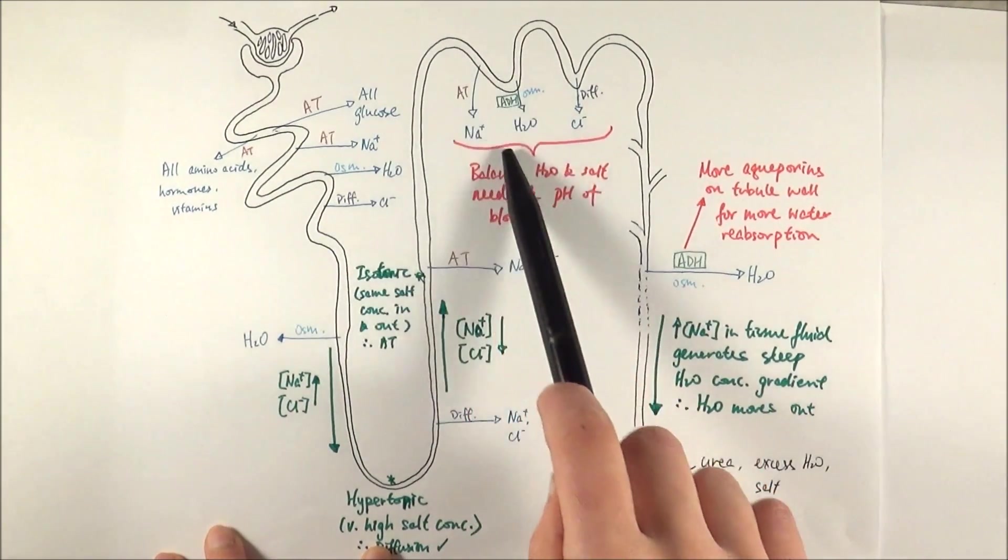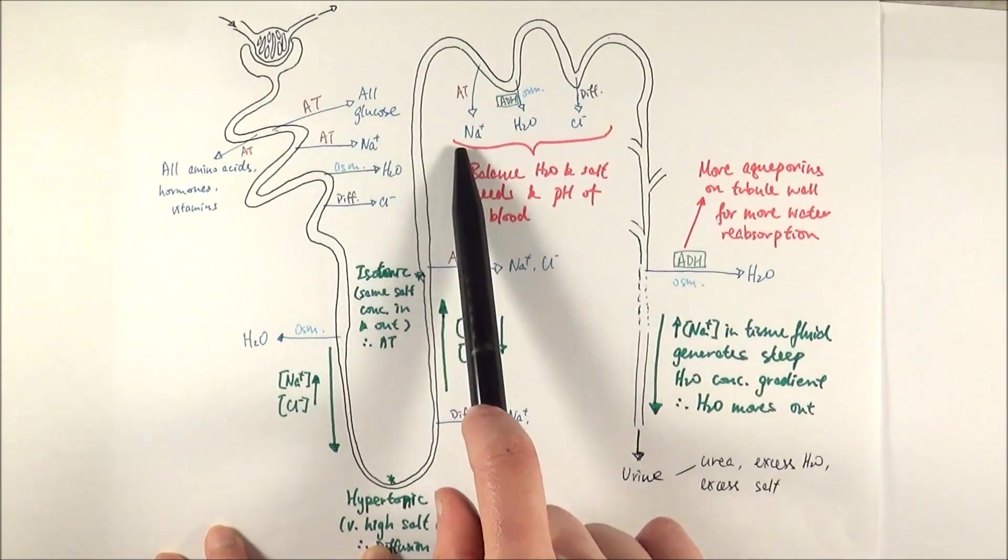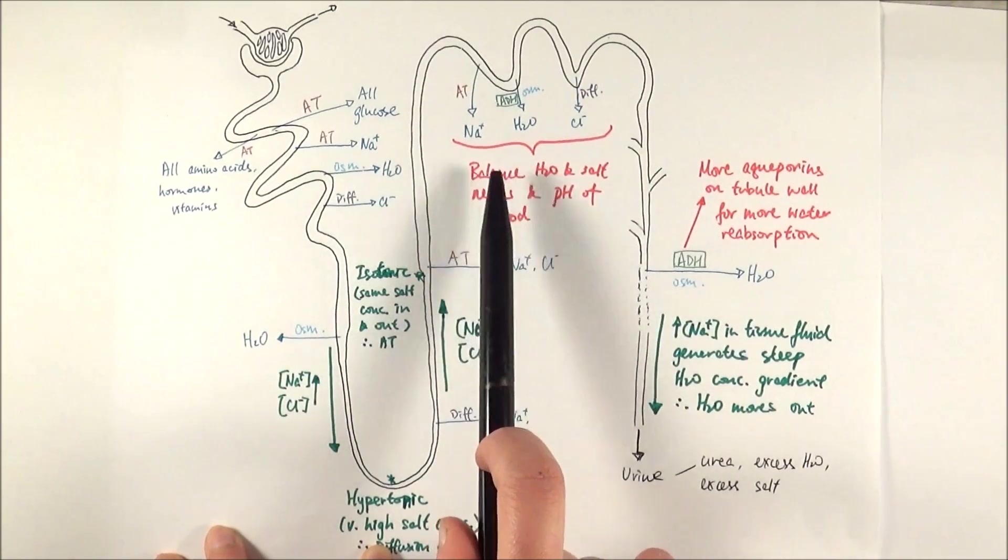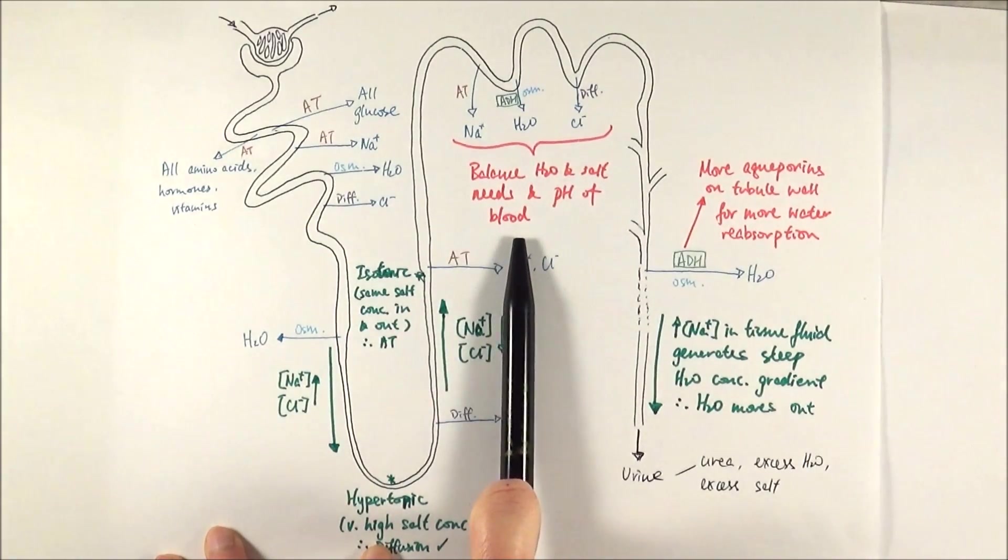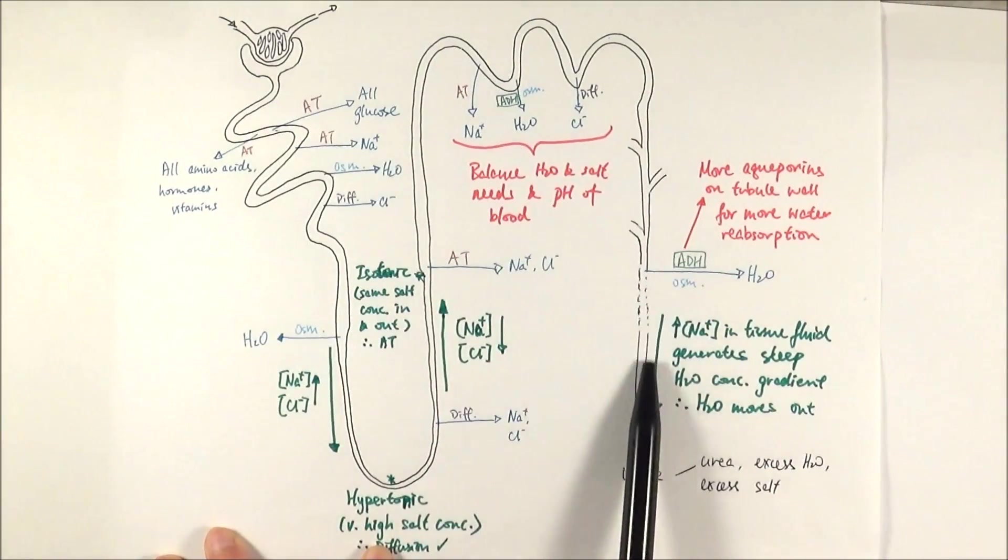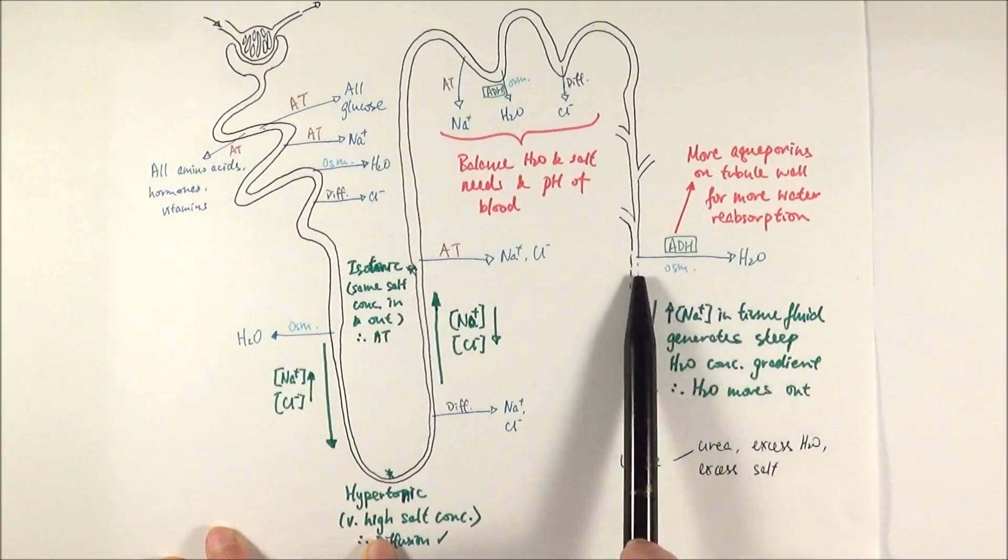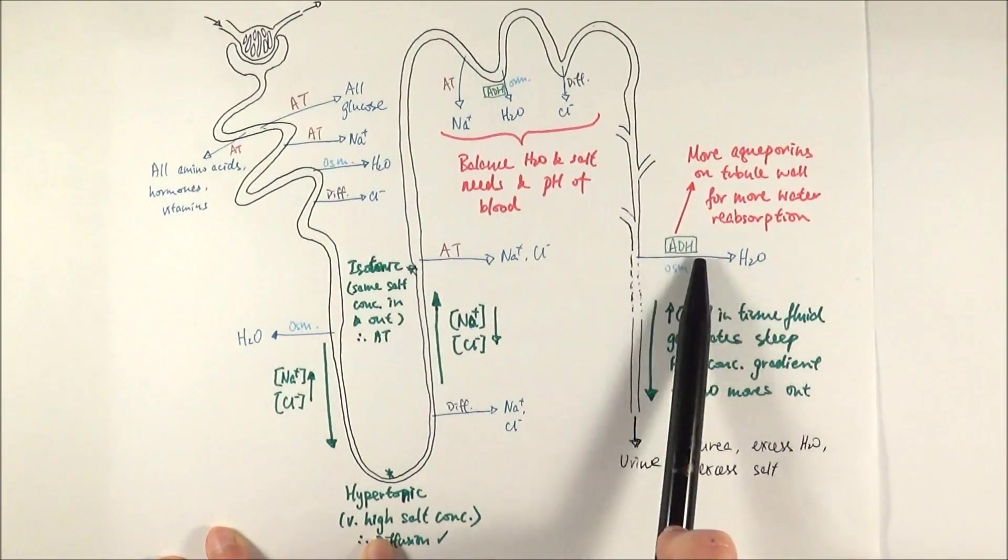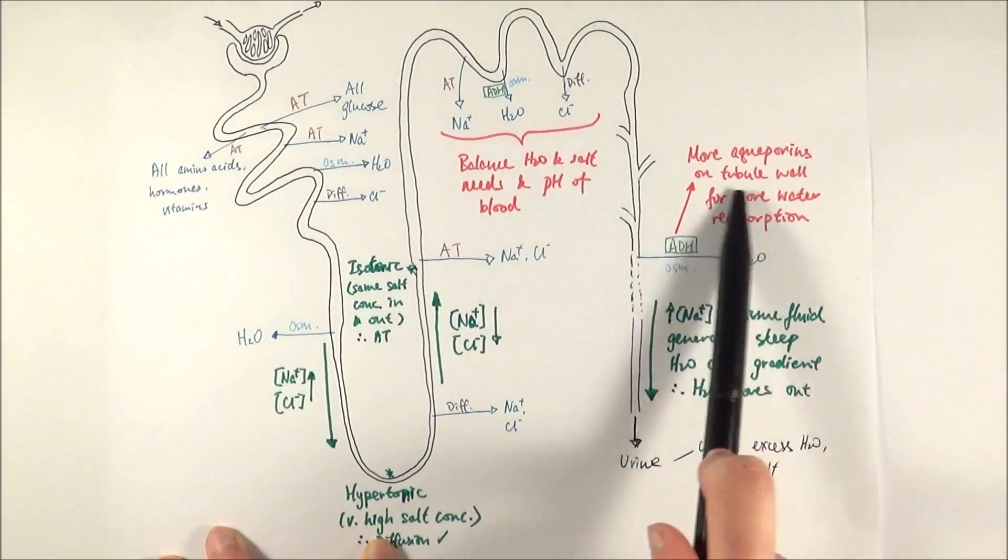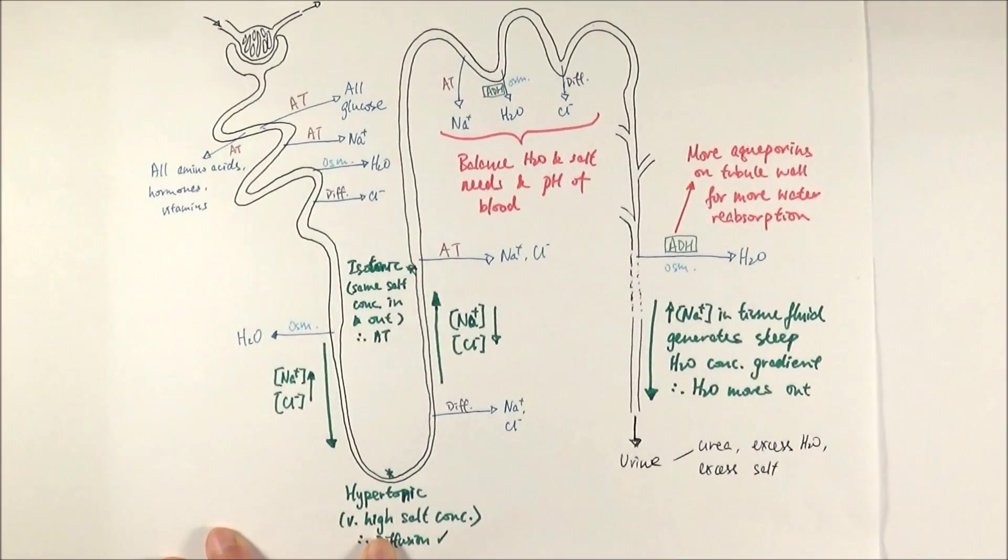Then it goes into the distal convoluted tubule where it will reabsorb more of the salt and water if the body needs to balance the water and salt concentrations and the pH of the blood. Then it goes into the collecting duct where it does the final osmoregulation bit. If more water needs to be reabsorbed depending on the situation of the body, then more or less ADH will be released to tell more aquaporins to be deposited onto the wall for water reabsorption.